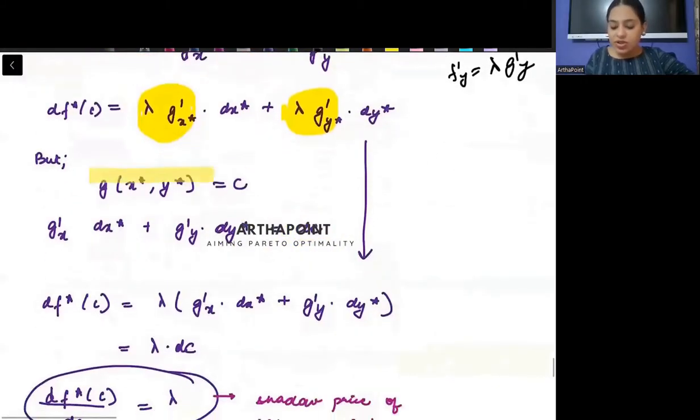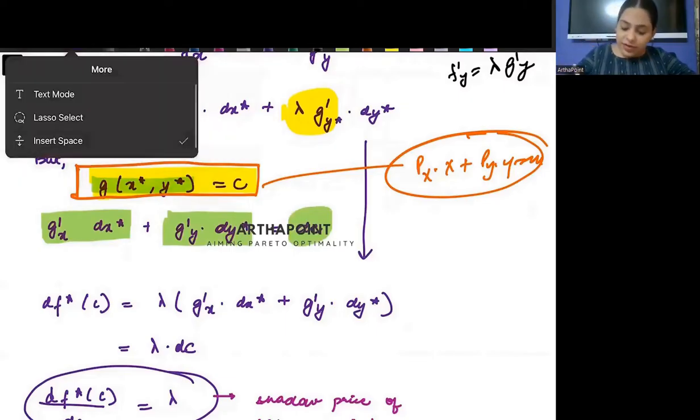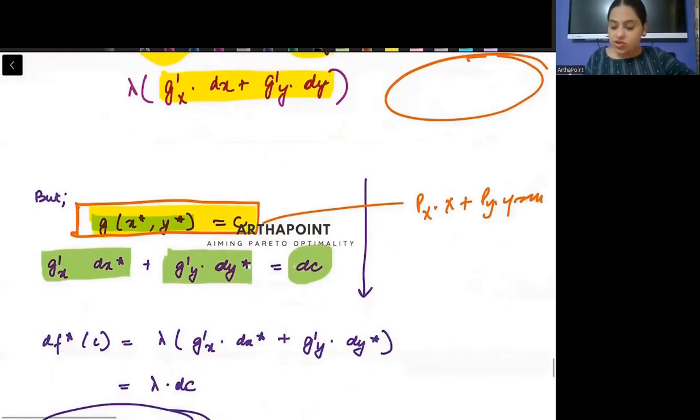But now if I look at my constraint, my constraint kya tha? My constraint is that g is equal to c. Constraint kya hota hai? That p_x into x plus p_y into y is equal to m. So this is my constraint. So if I differentiate this constraint on both sides, what will I get? A function kya se differentiate karte. Here I will apply chain rule. So g'_x dx plus differentiate with respect to y dy is equal to differentiation with respect to c. So now what do I see here, that if I take lambda common, I will be left up with g'_x dx plus g'_y dy. And this g'_x dx plus g'_y dy from differentiating the constraint is equal to dc.